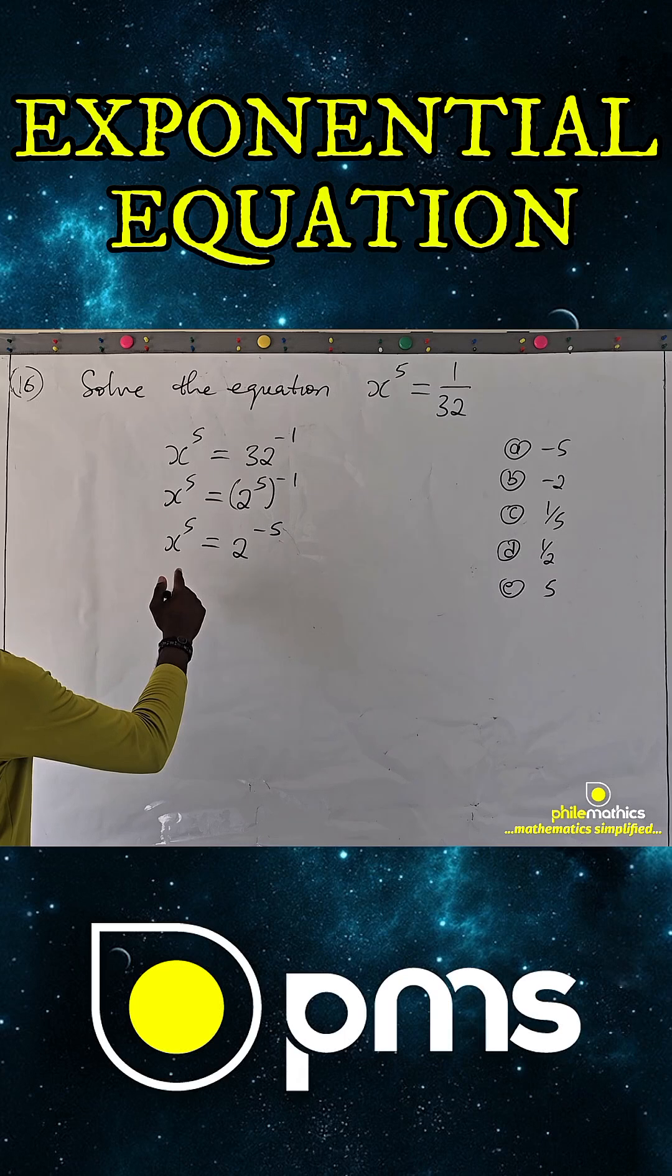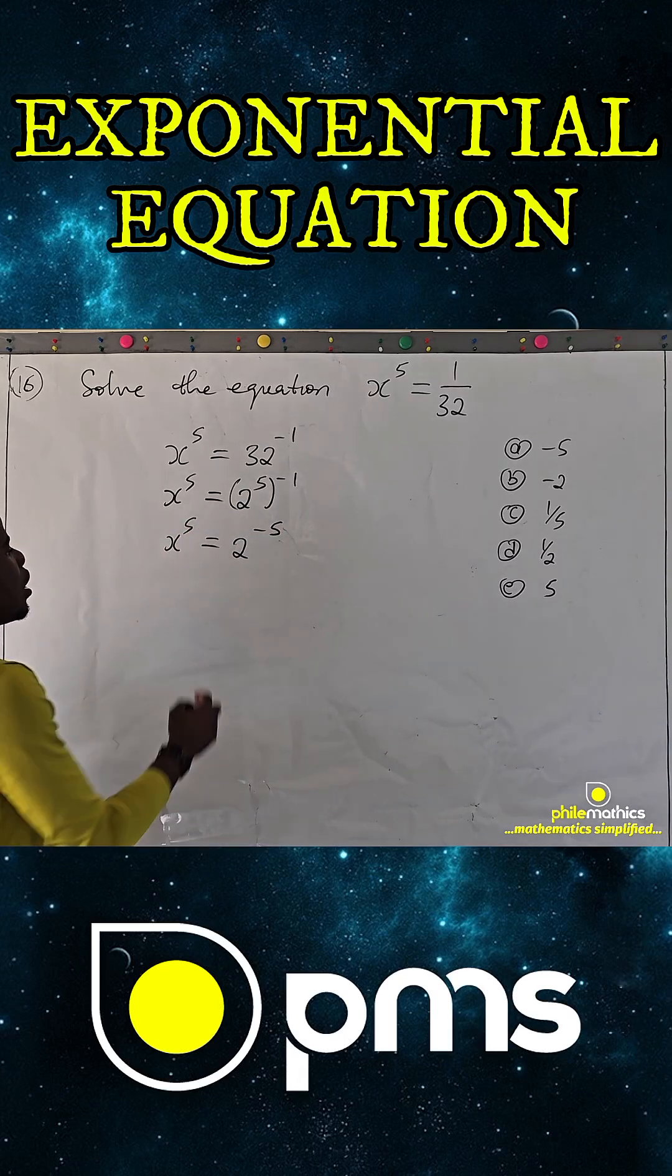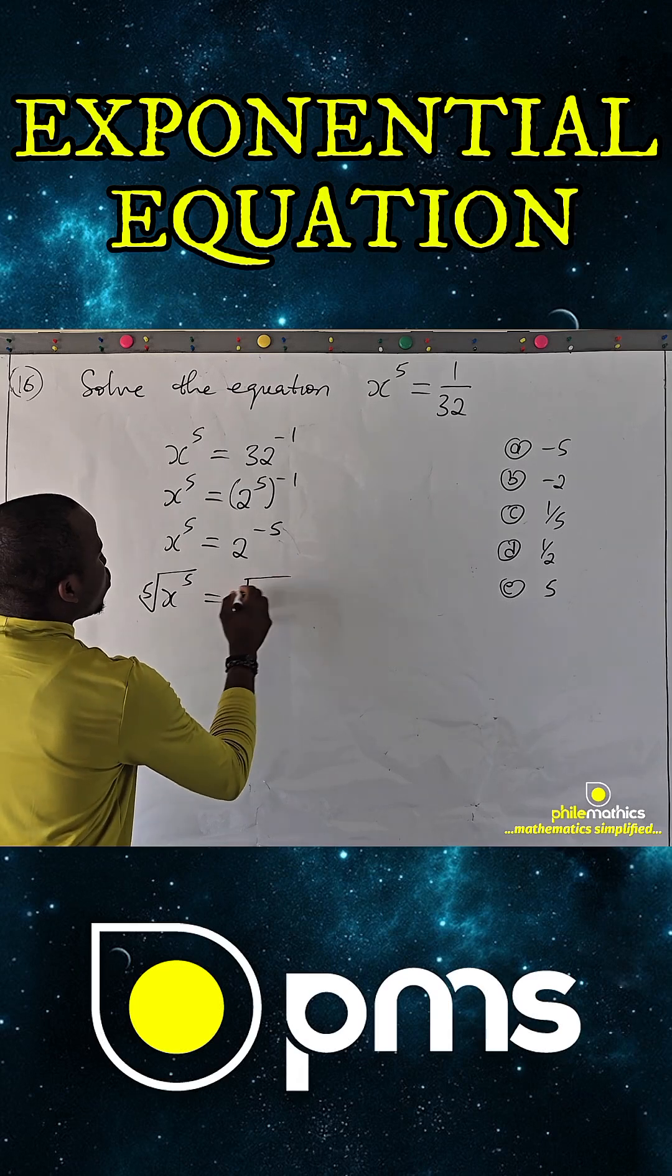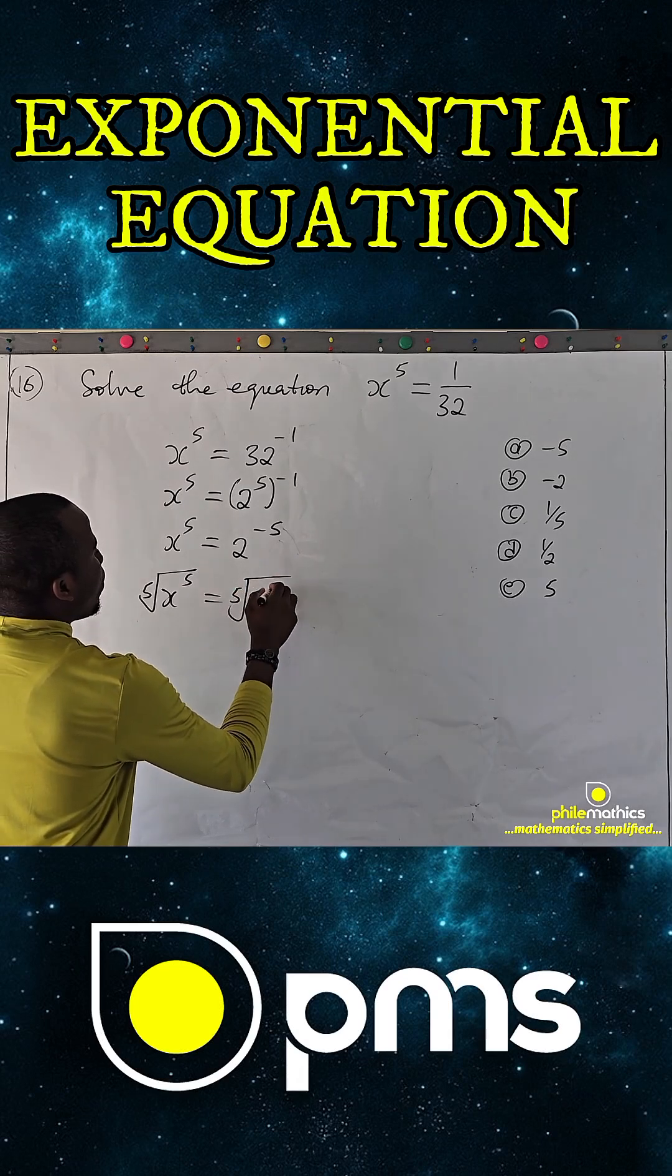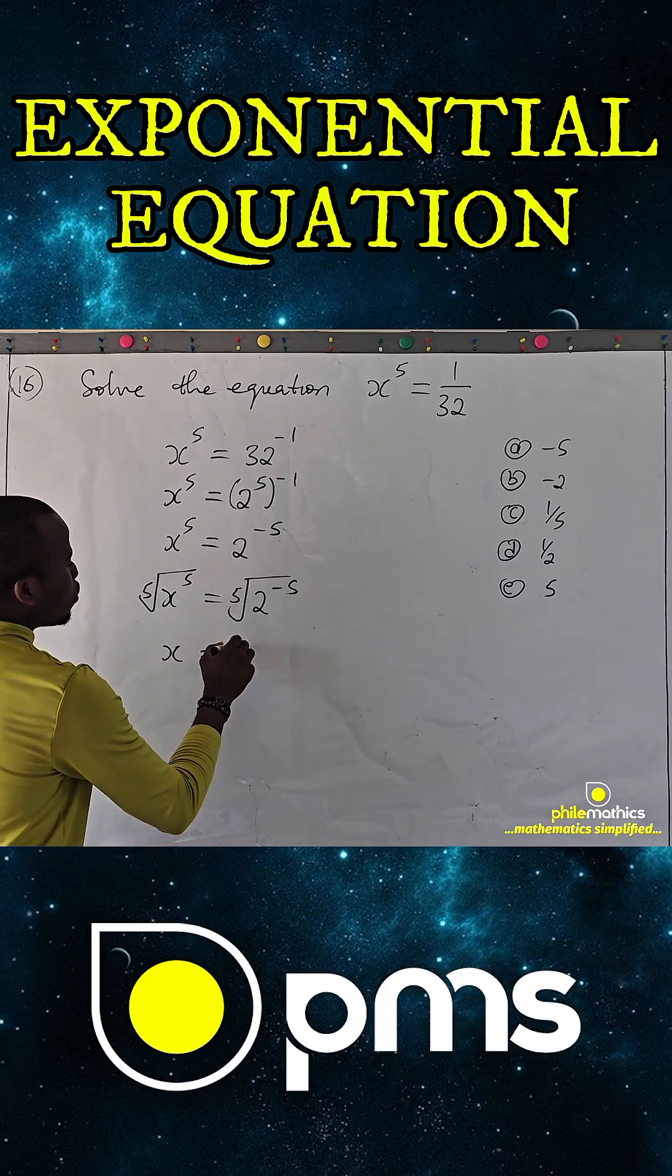At this point I can take fifth root of both sides to find what x is, and this will give me x to power 5 to the fifth root, this is fifth root of 2 to power minus 5.